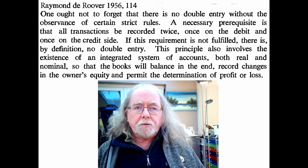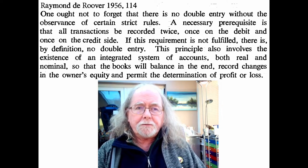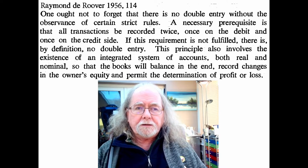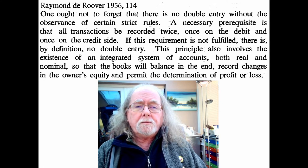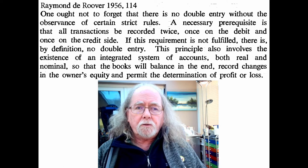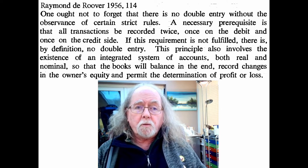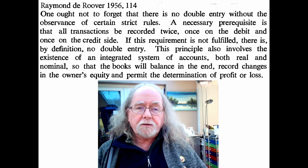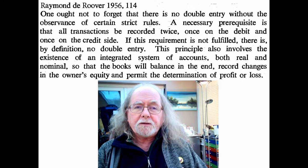Raymond de Roover was a very influential person in the literature of the history of accounting. There are two major researchers in accounting history in the 20th century who wrote in English, and he was the first and probably the most influential. The other was Basil Yamey, who we'll come to later in the course. De Roover started in the mid-1930s; Yamey started in the 1940s. Their interests were different but overlapped a lot, and what de Roover wrote was to some extent responsible for some of the thinking that Yamey developed.